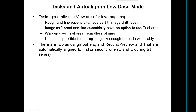In low-dose mode, SerialEM keeps two auto-align buffers: one for record and preview type images, and one for trial images. When tilt series is active, this is enforced to be the D and E buffers respectively. It will automatically try to align the image in buffer A to one of these buffers depending on which kind of image it is.